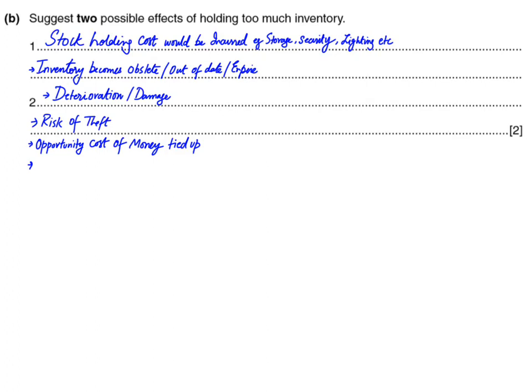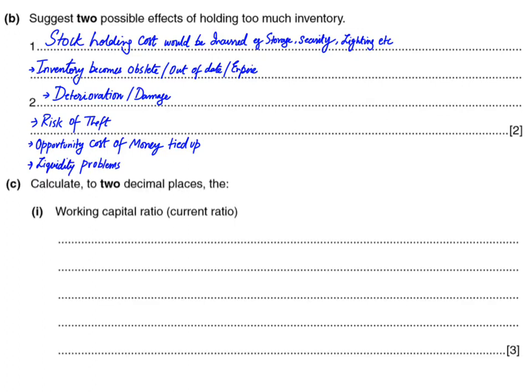The opportunity cost of money tied up — you may have studied this in business studies. Opportunity cost is the value of the second-best alternative. If you choose the best option you forgo the second-best option, and that foregone opportunity is the opportunity cost. If we invest in inventory we cannot invest anywhere else, so there can be liquidity problems for the business. These were basically some effects of holding too much inventory.